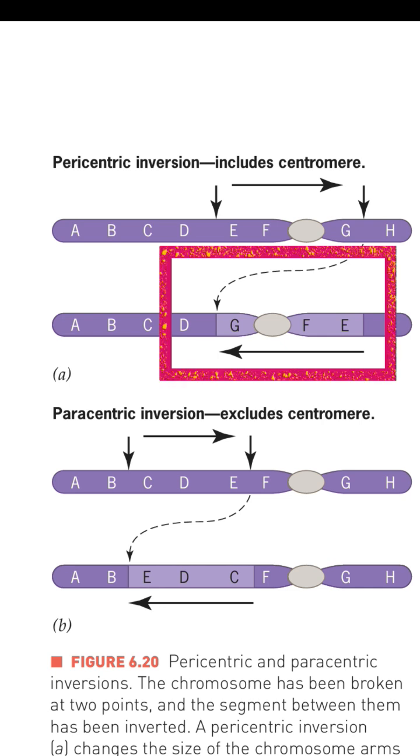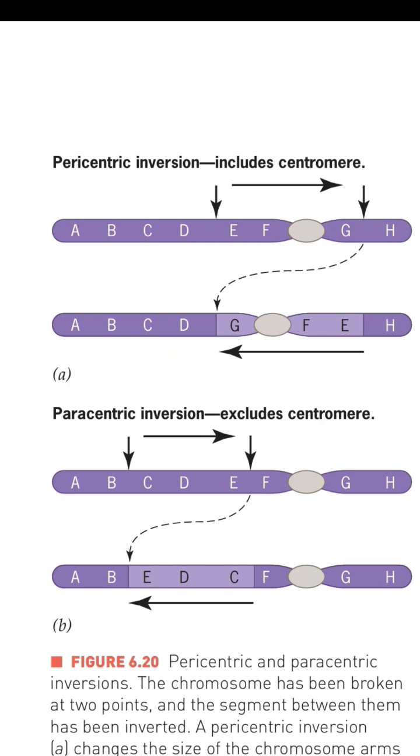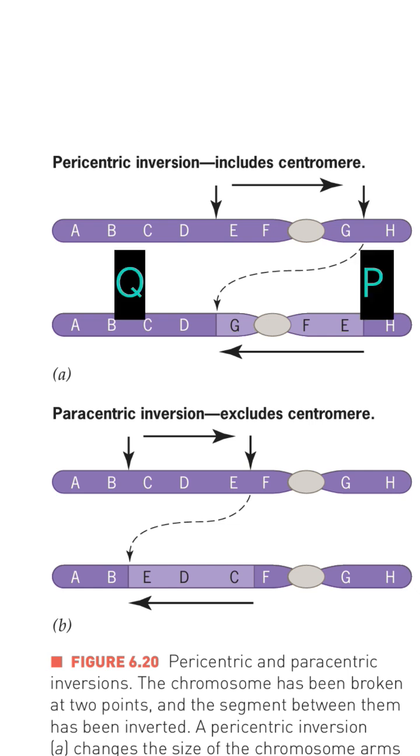For example, the segment D to G with the centromere between E and F is inverted to G, F, centromere, E. This results in a change in the relative length of the chromosome arms (p and q arms), easily detectable by karyotyping because chromosome structure changes.